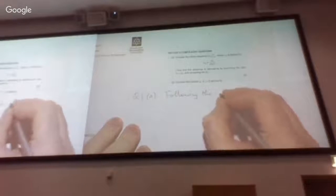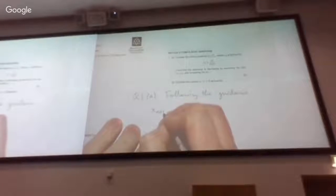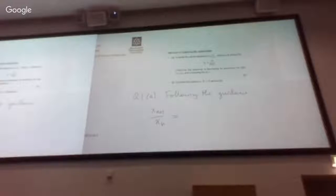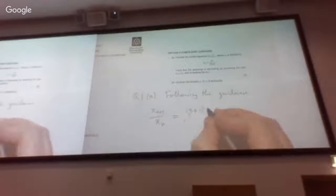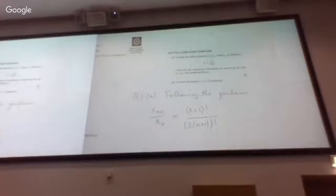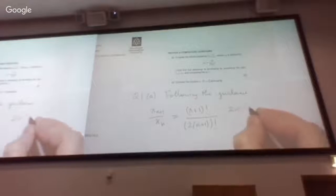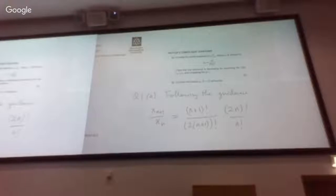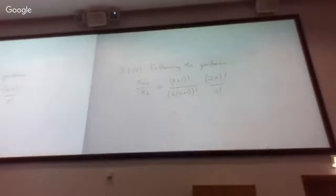Following the guidance, we will look at xn+1 over xn. We're not talking about any limit here, not about the limiting behavior of this sequence, just looking at its general behavior. The kind of things you need to know here is manipulating the notation and understanding the definition of factorials. So xn+1 is (n+1) factorial over (2(n+1)) factorial, and then divided by xn — that's the same as multiplying by the reciprocal, which is (2n) factorial divided by n factorial.